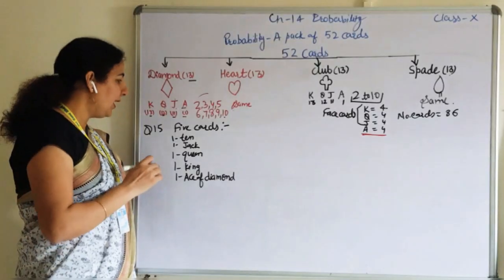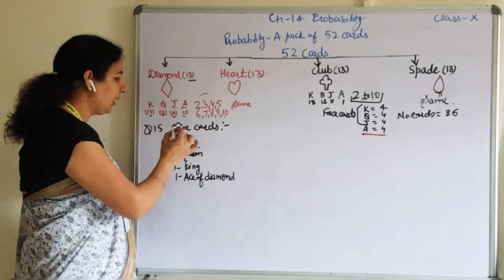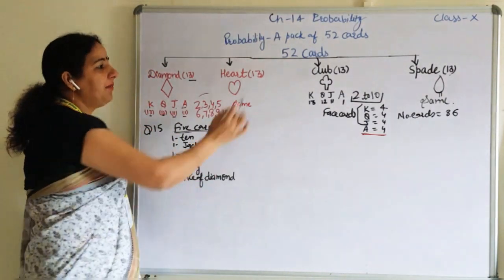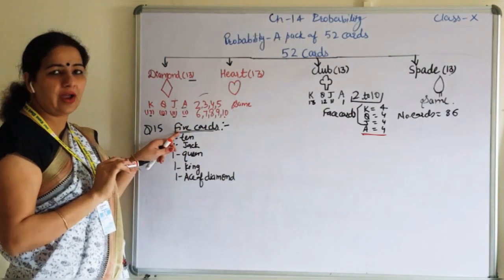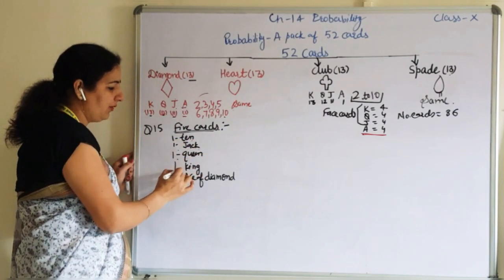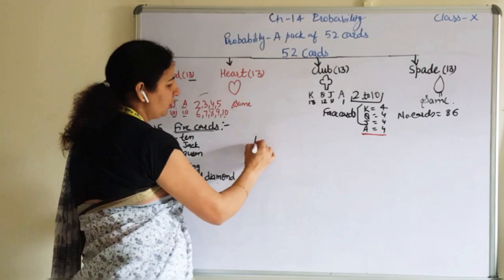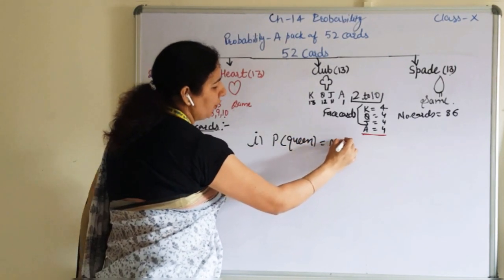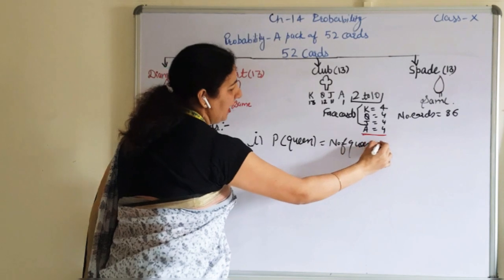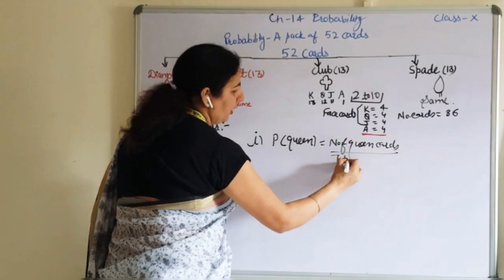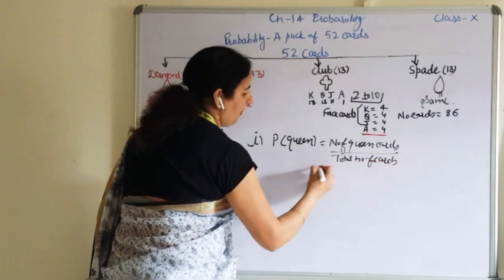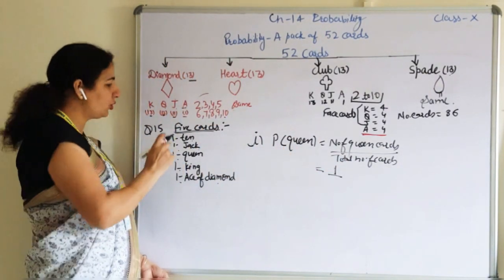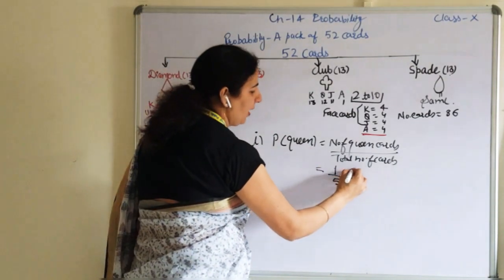Next question from your NCERT: they have just written that 5 cards have been taken. We are only having 5 cards — this time not 52 cards. The 5 cards are: 10, jack, queen, king, and ace. The first question is: what is the probability that the card chosen is a 10? Number of 10 cards divided by total number of cards = 1/5.